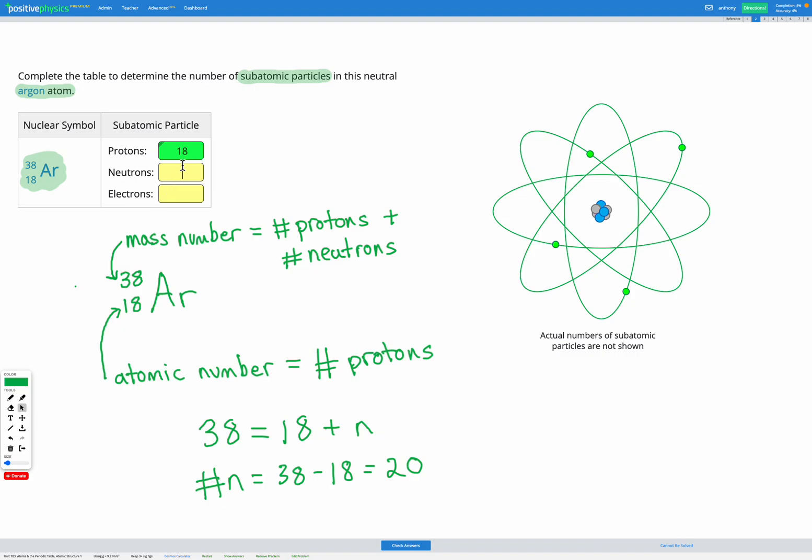So let's test that out. Awesome. So we've got 18 protons and 20 neutrons, and we figured that all out from this nucleus symbol that was provided. The last thing is the electrons.